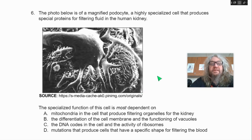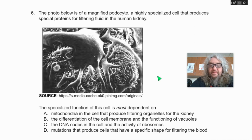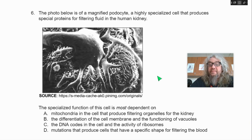Number six. The photo below is of a magnified podocyte, a highly specialized cell that produces special proteins for filtering fluid in the human kidney. The specialized function of the cell is most dependent on — A, mitochondria in the cell that produce filtering organelles for the kidney; B, the differentiation of the cell membrane and the functioning of vacuoles; C, the DNA codes in the cell and the activity of ribosomes; D, mutations that produce cells that have a specific shape for filtering the blood.